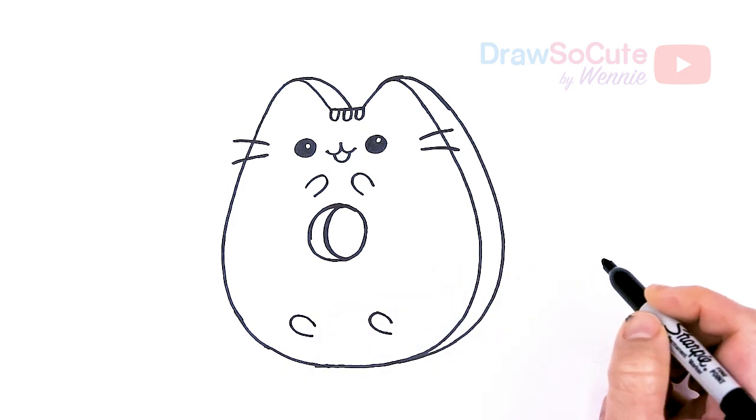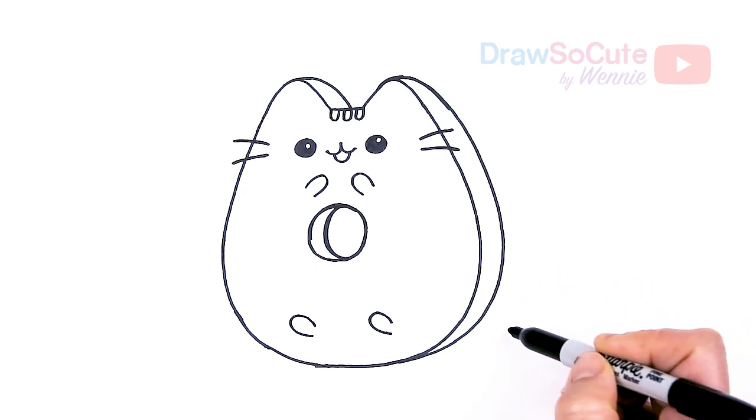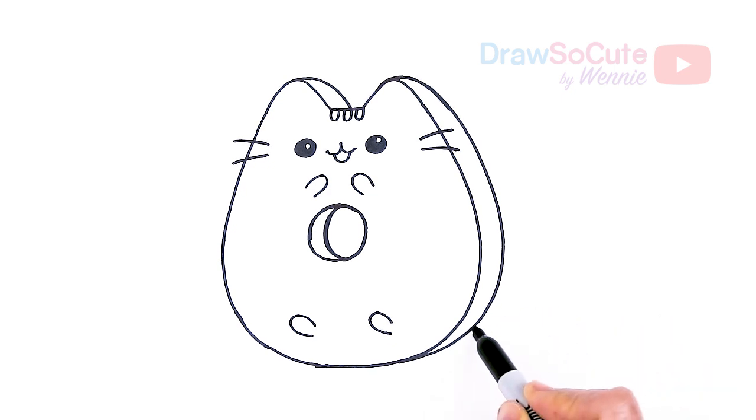And then we still need to give Pusheen a tail even though it's a donut. So let's come about, let's say about right here. And pop in the tail, short little tail and round it off. And thicken it up.